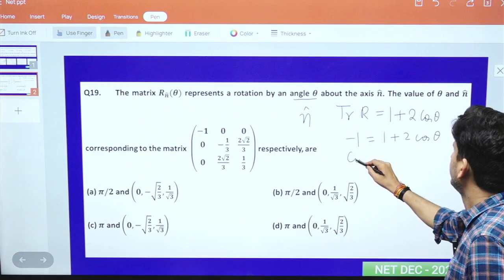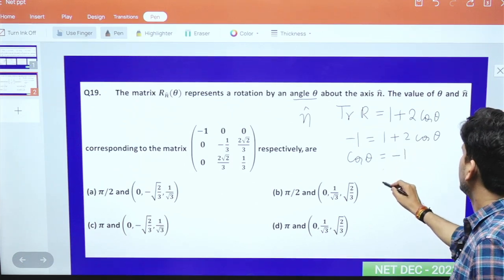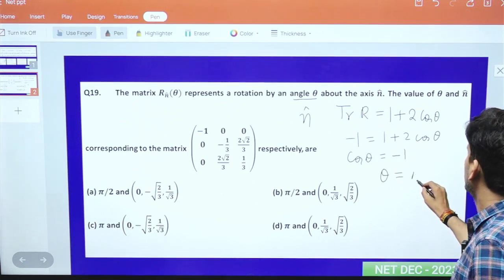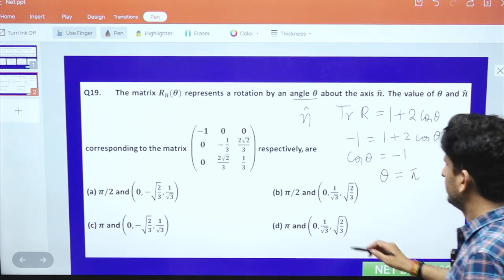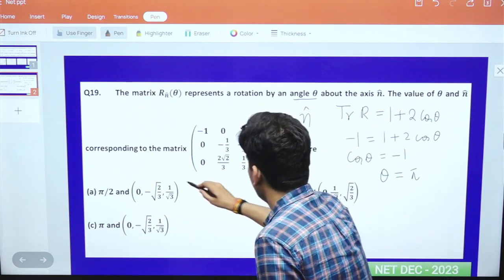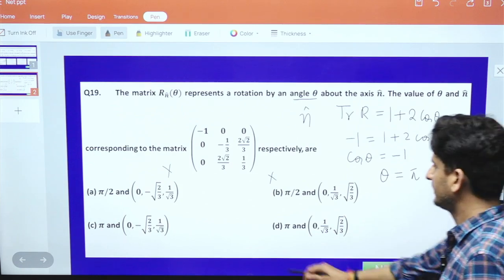Since theta is pi, two options are wrong. Either this option or this option is correct.